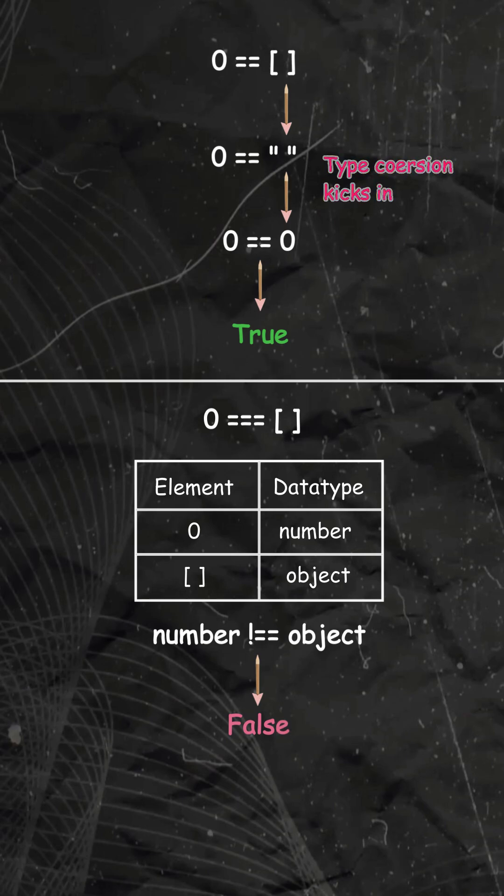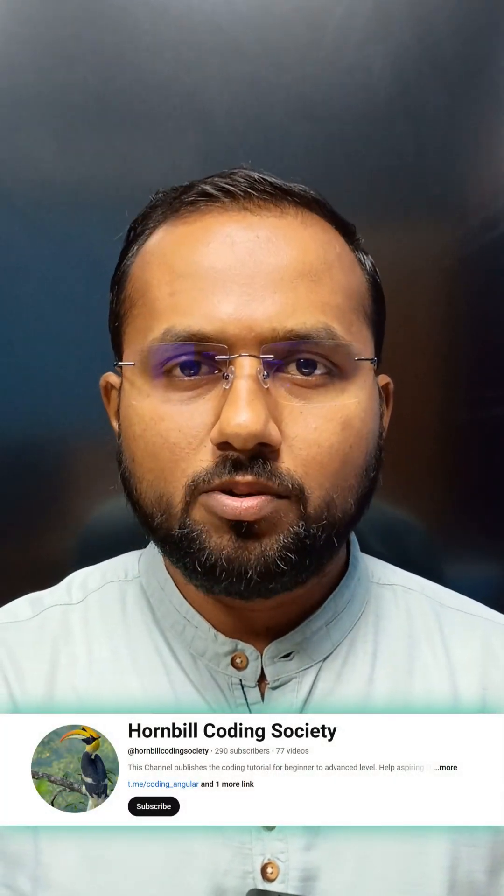So remember loose equality will convert your values under consideration whereas strict equality compares strictly along with data type. JavaScript can be weird but we will make it simple. Stay tuned to master it.